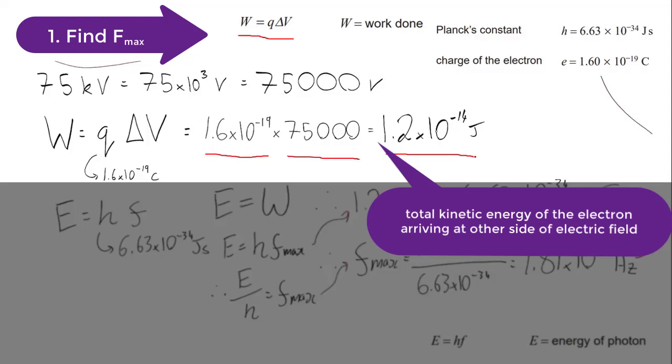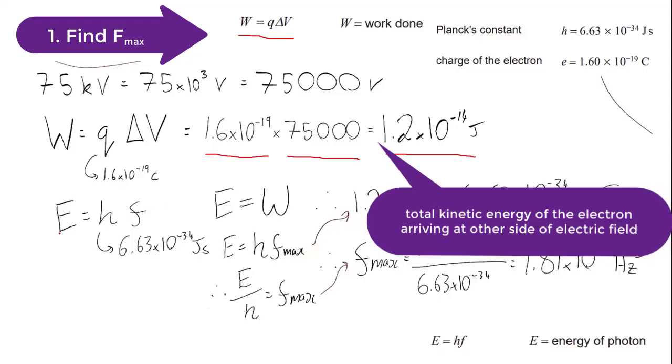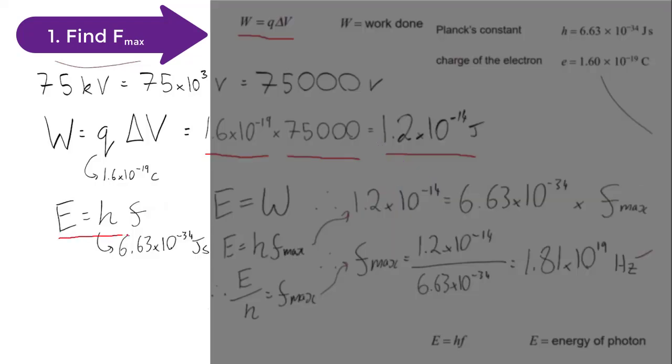Then we proceed to use this formula here. Energy is equal to Planck's constant times the frequency. So if we assume that every joule has been converted into an x-ray, i.e. we're talking about the electron being stopped in its tracks by a metal nucleus, then we can rearrange this formula to suit and use all the energy out of the W = qΔV to determine the maximum frequency of the x-ray itself.